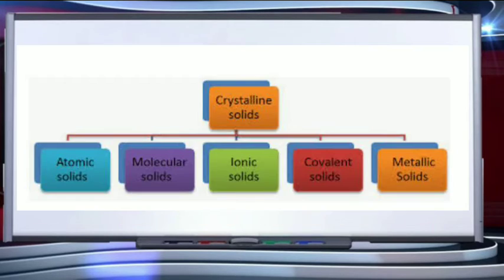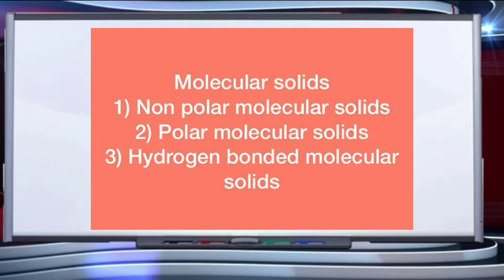Crystalline solids are classified into four categories: molecular solids, ionic solids, covalent solids, and metallic solids. Note that atomic solids and covalent solids are the same, so finally there are four categories. Let's discuss these stepwise.